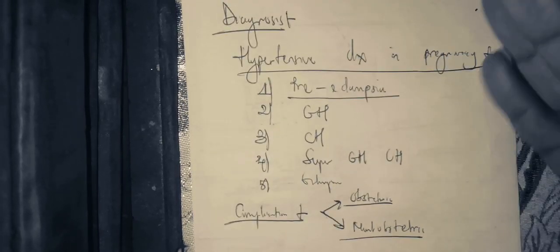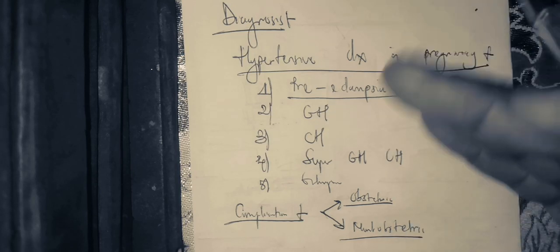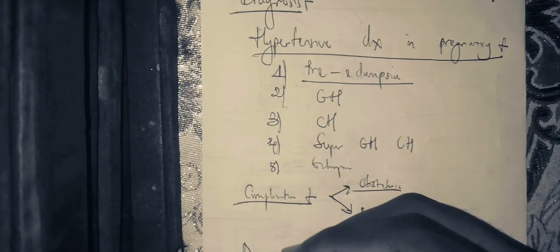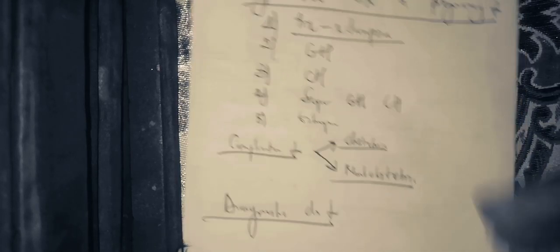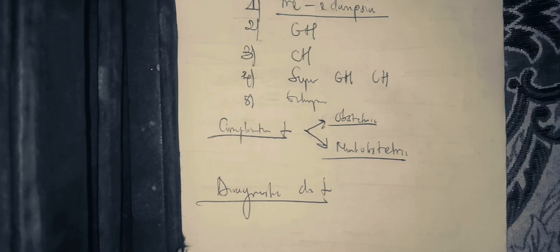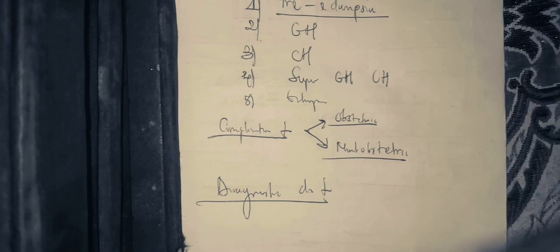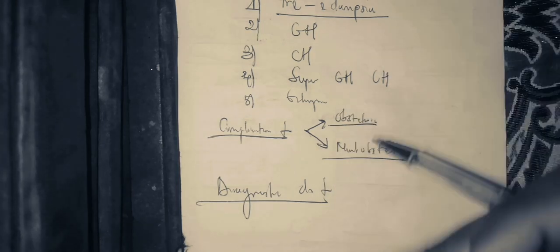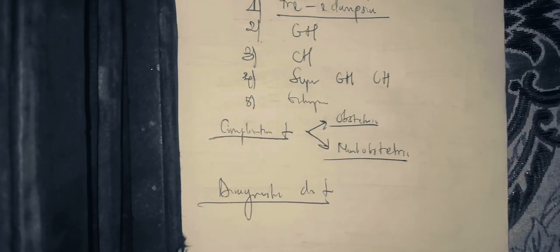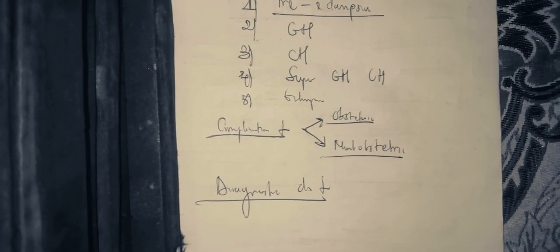After speaking about the complications, you have completed your diagnosis. In the diagnostic discussion, you bring out elements like the risk factors, then go to the clinical presentation, then speak about the complications, and also the background of the patient. This is how you structure your diagnosis when you have a patient with preeclampsia. After completing the diagnosis, you now move on to visualize the investigations.